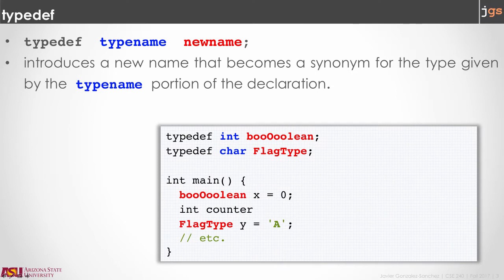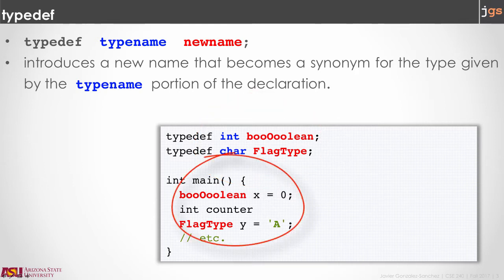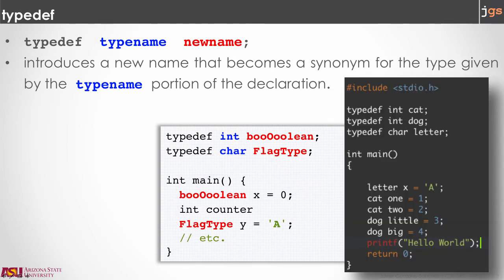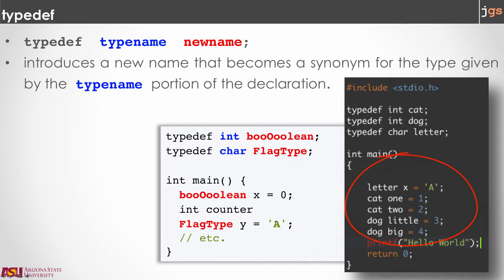Typedef allows us to create an alias for a type. For instance, in the example, boolean or flag type are used as aliases for int and char. So x is a variable of type int and y is a variable of type char. Using boolean or int is exactly the same. Using flag type or char is the same. You just create a new name for a type that already exists. As a second example, cat and dog are aliases for int and letter is an alias for char. So later you can create a variable x that is a letter, a char, and you can create variables 1 and 2 and use cat as a type, but they are really integers. So you can assign the value 1 or 2 to those variables.